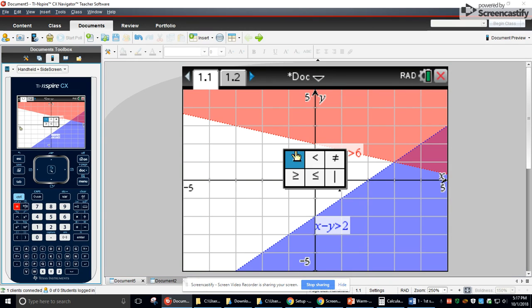Control equals over here pulls up the little menu of inequality signs. Okay. And that's how you would graph it. Okay. Bye.